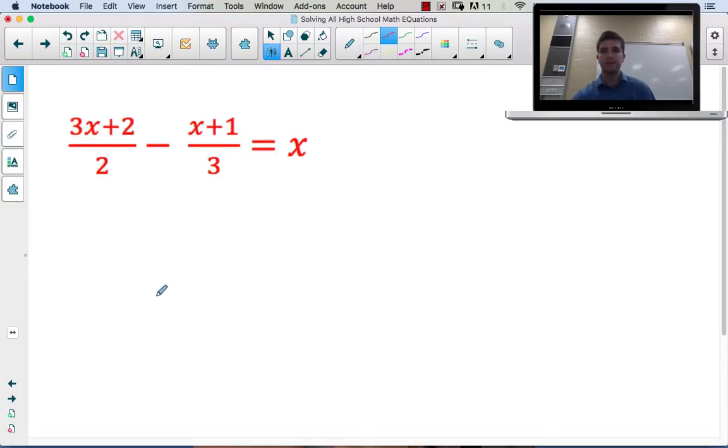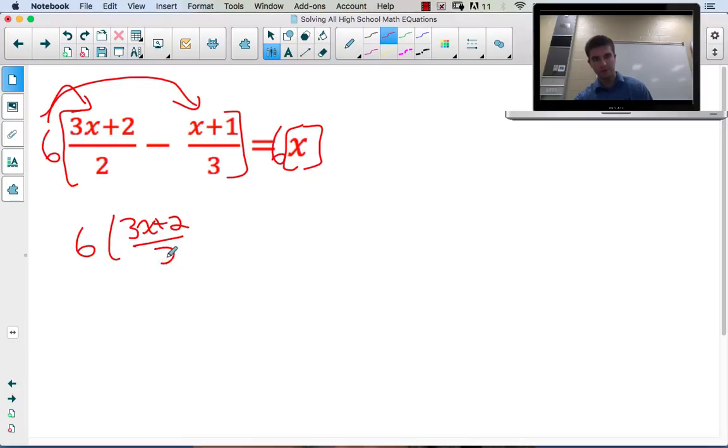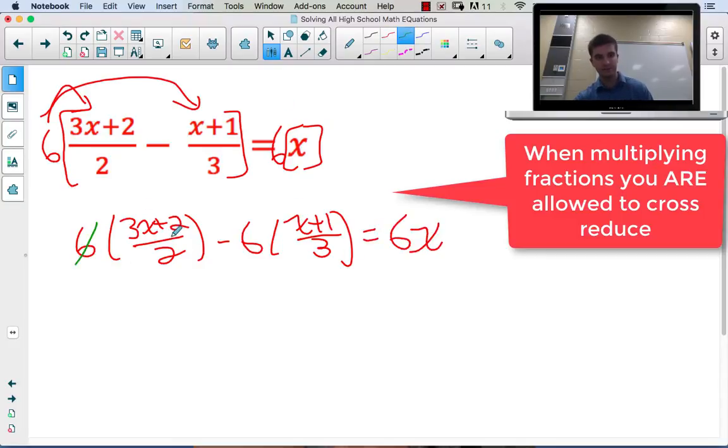One more grade 9 equation. I have multiple fractions, but they're not set equal to each other, so cross-multiplication isn't appropriate. We get rid of these fractions by multiplying both sides by a common denominator. Common denominator between 2 and 3 is 6. Multiply both sides by 6, and the fractions will be gone. So 6(3x+2)/2 - 6(x+1)/3 = 6x. When 6 divides by 2, that's 3; 6 divides by 3, that's 2. The fractions are gone.